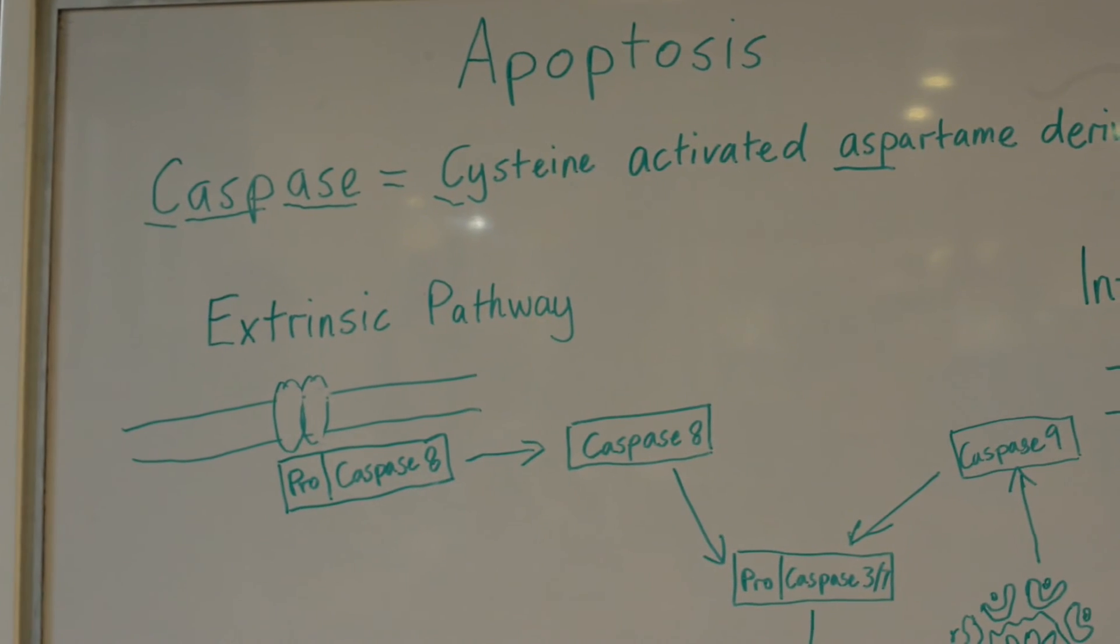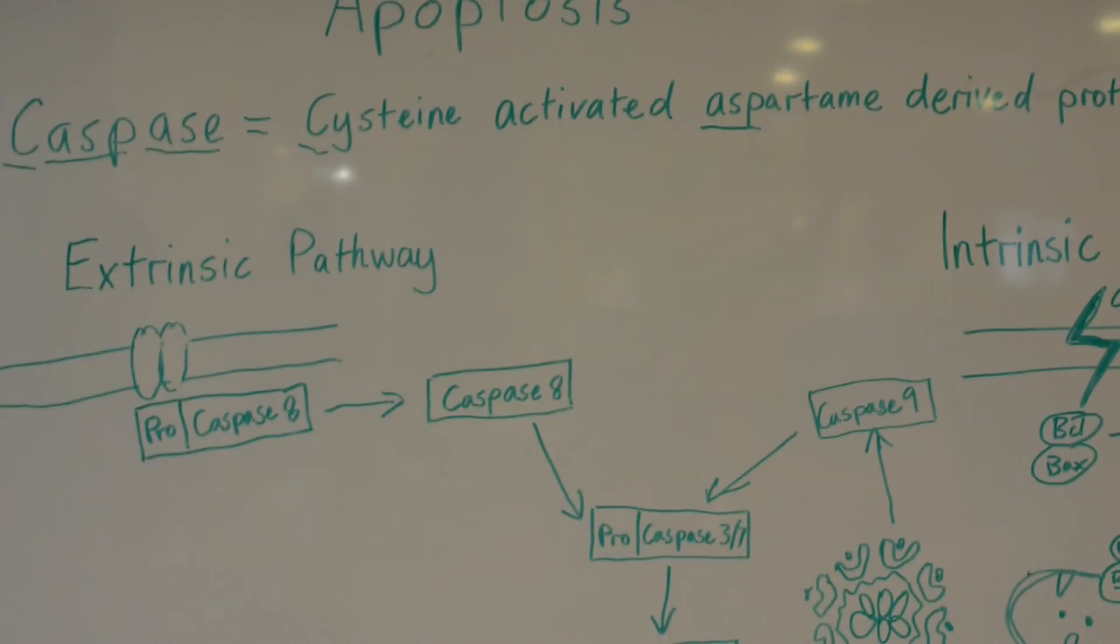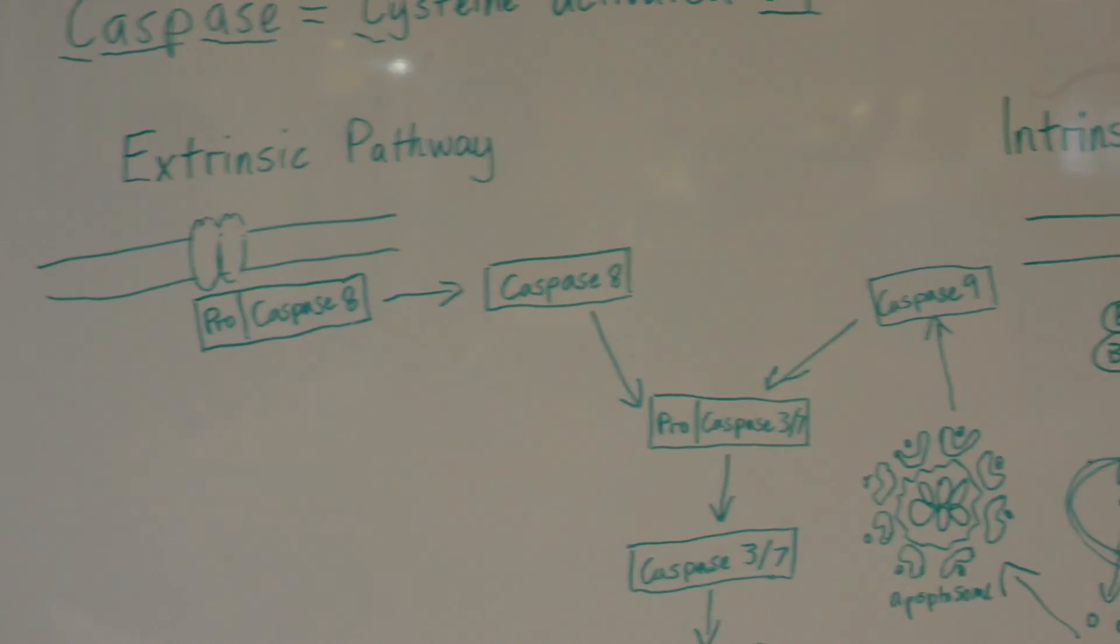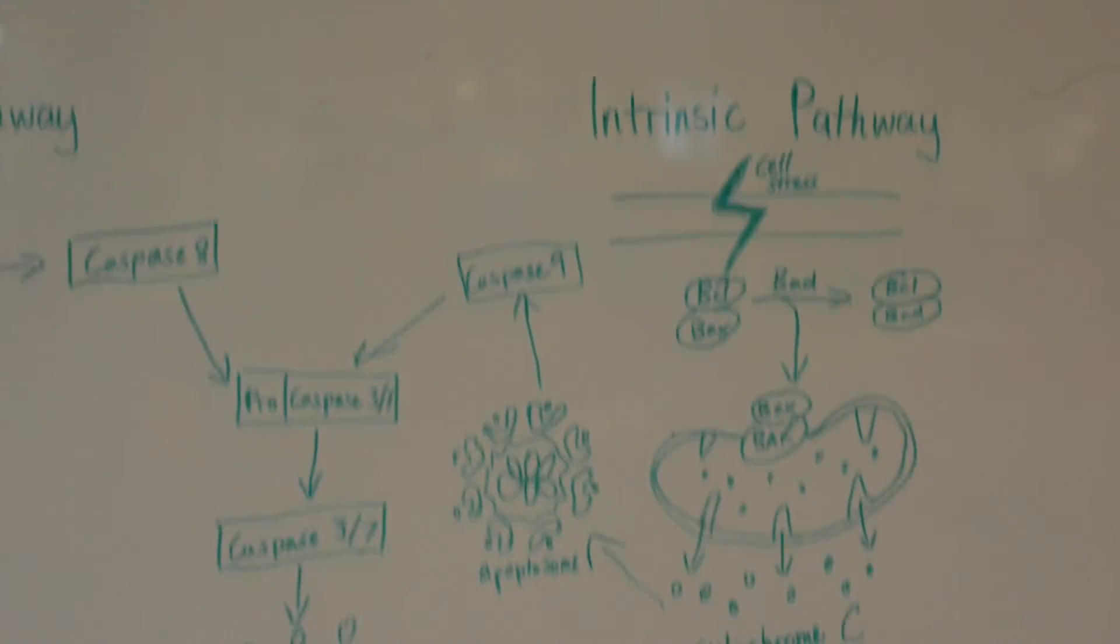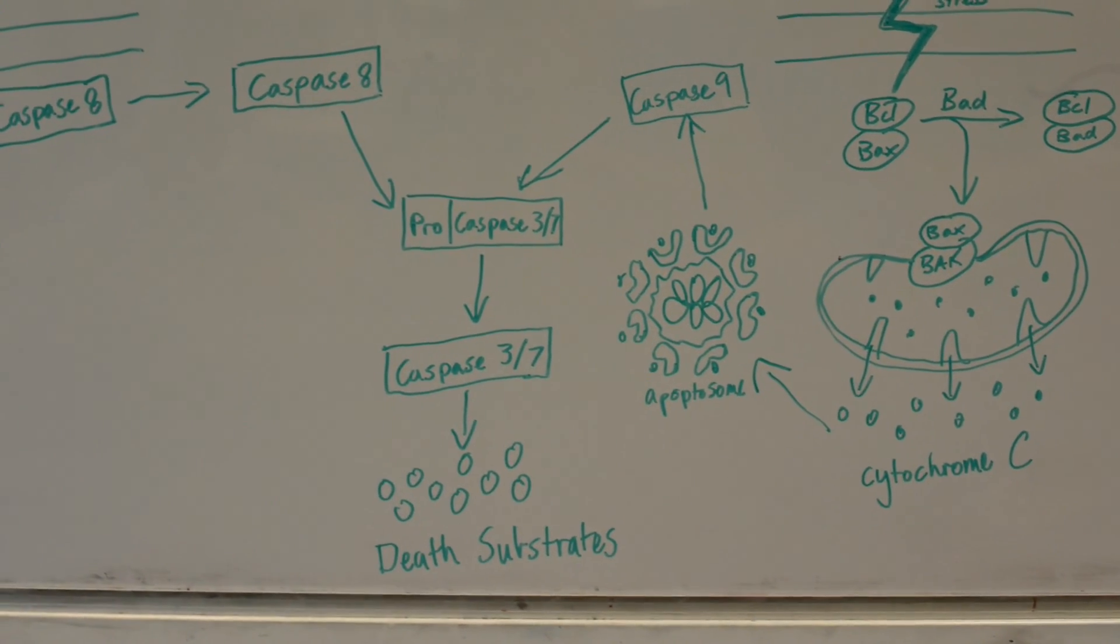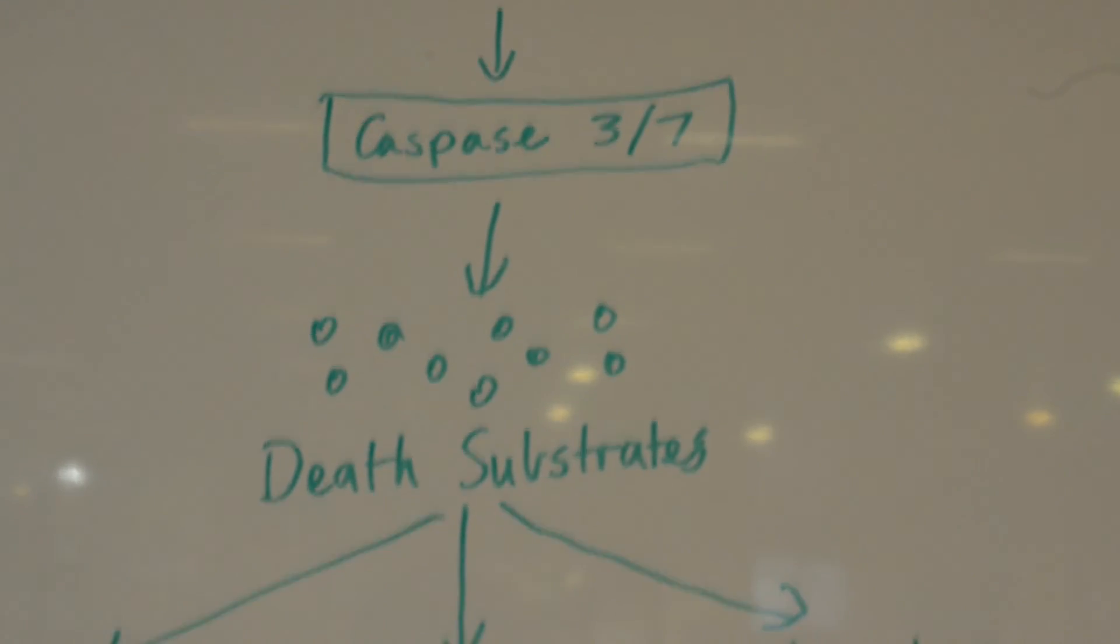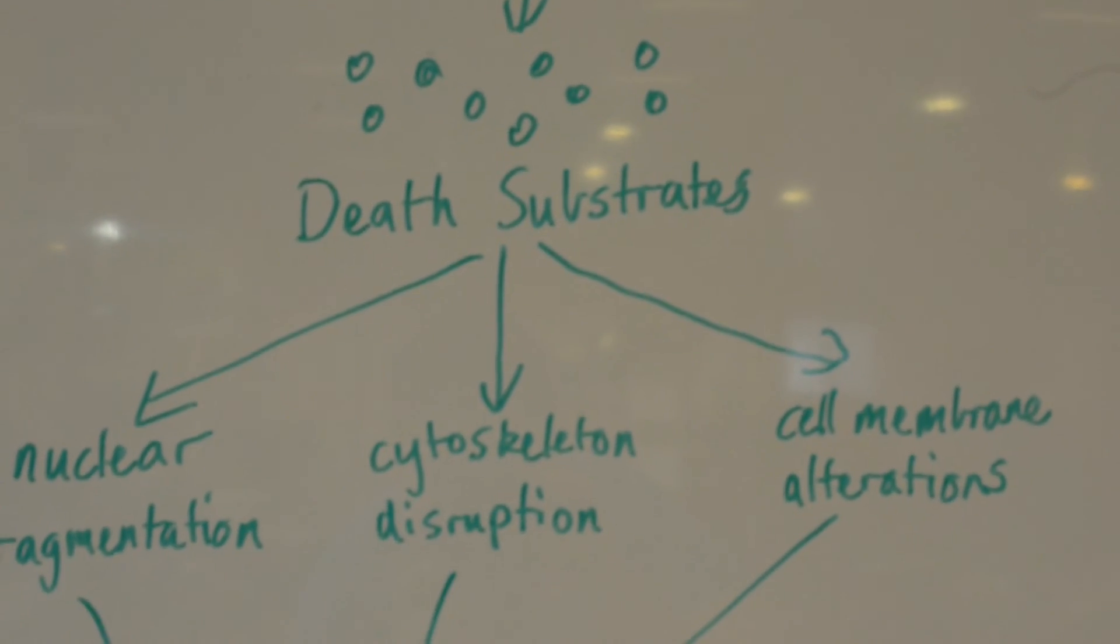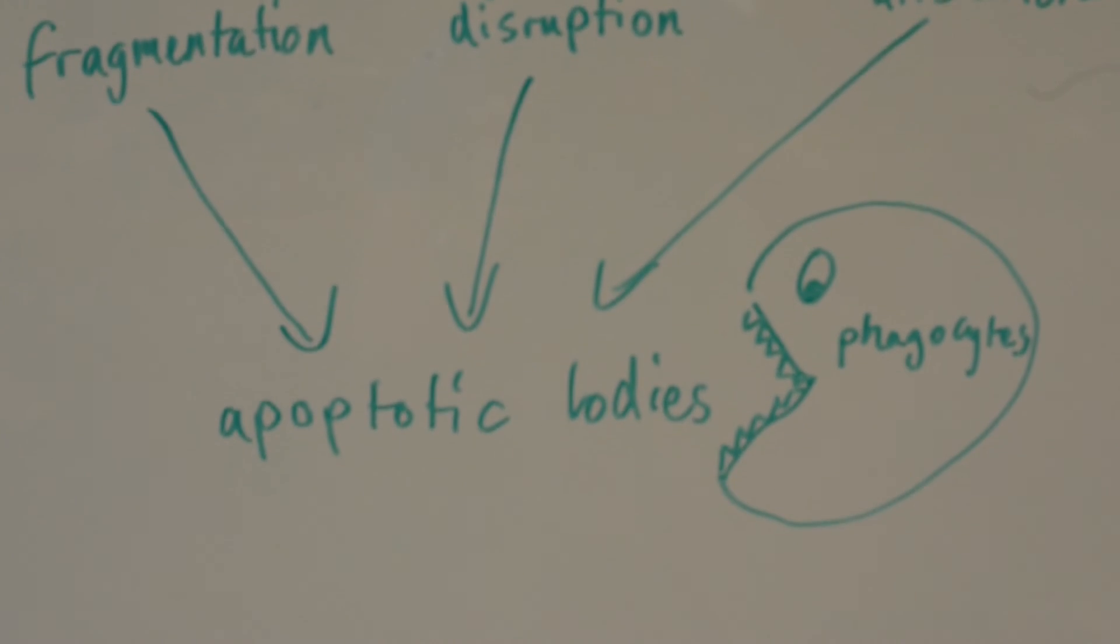In summary, apoptosis begins when the cell undergoes stress. This induces the release of pro-apoptotic signals that send the cells down either the extrinsic or intrinsic pathway. These pathways both involve the activation of initiator and effector caspases that activate the death substrates. It is these death substrates that cause a range of cellular changes that lead to apoptosis.